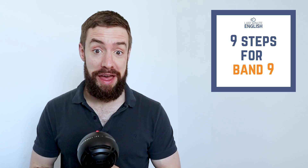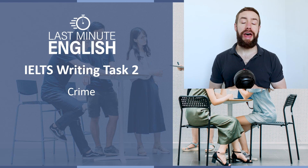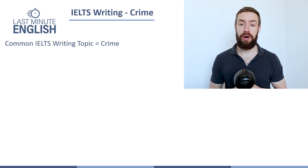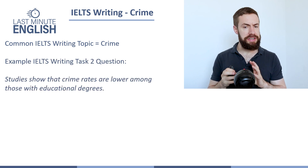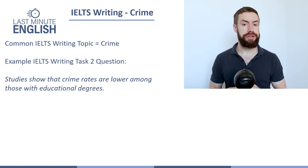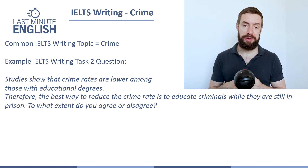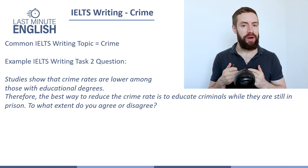Hello, I'm Francis from Last Minute English. Today we're going to look at nine steps to get you a band nine in your IELTS writing. Let's get started. We're going to be looking at an IELTS writing task two question on the common topic of crime. The question is: studies show that crime rates are lower amongst those with educational degrees. Therefore, the best way to reduce the crime rate is to educate criminals while they are still in prison. To what extent do you agree or disagree?